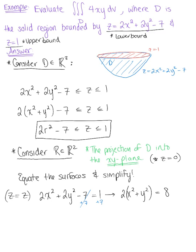Dividing both sides by 2, we are left with x squared plus y squared equal to 4, which is 2 squared. So this is a circle centered at the origin with radius 2.